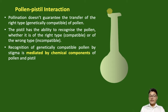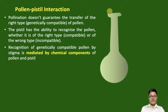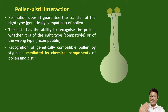Pollen pistil interaction is usually a chemically mediated process, occurring with the help of different biochemicals present within the pollen and pistil. Starting from the recognition of compatible pollen grains, it is a chemical process involving chemical signaling between the pollen and pistil.